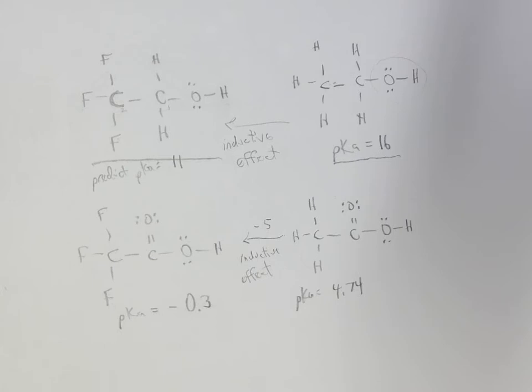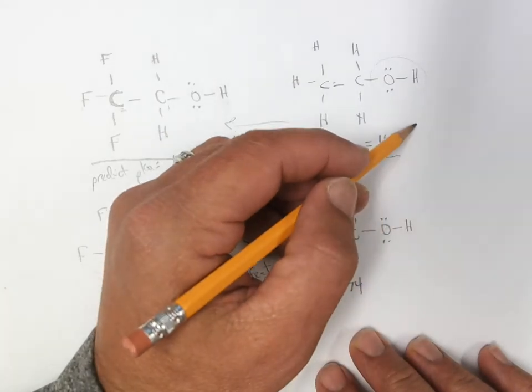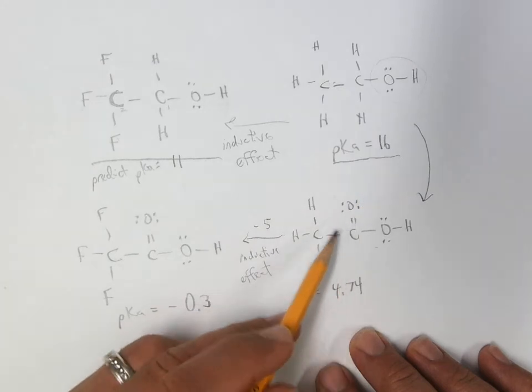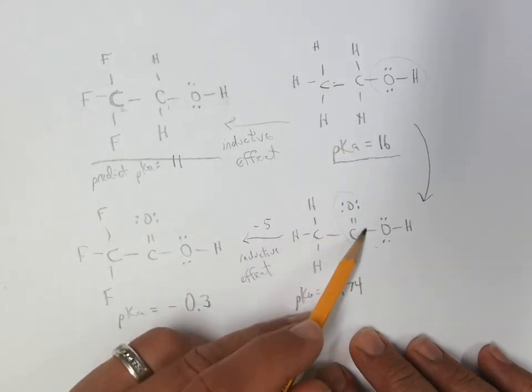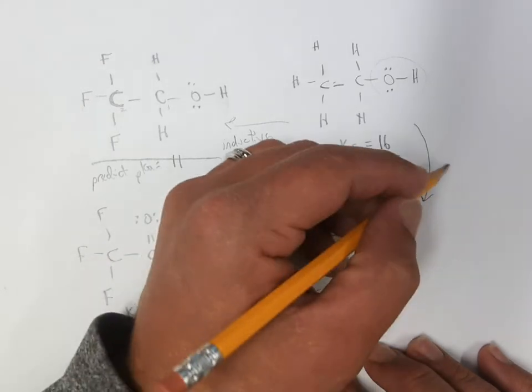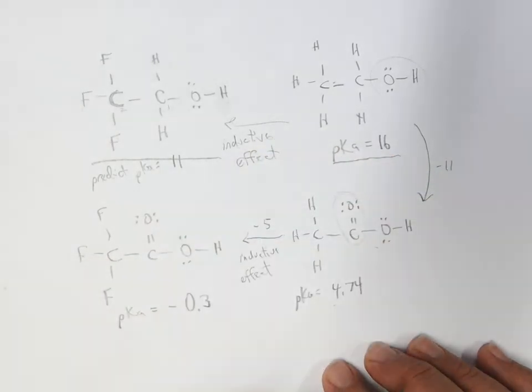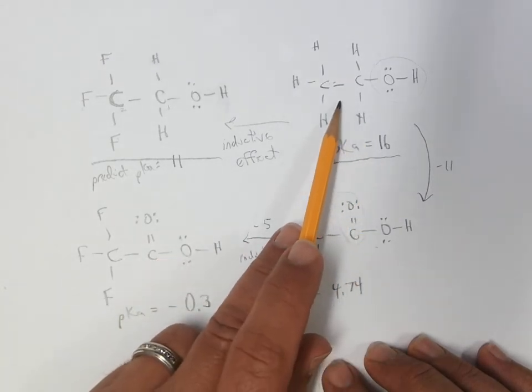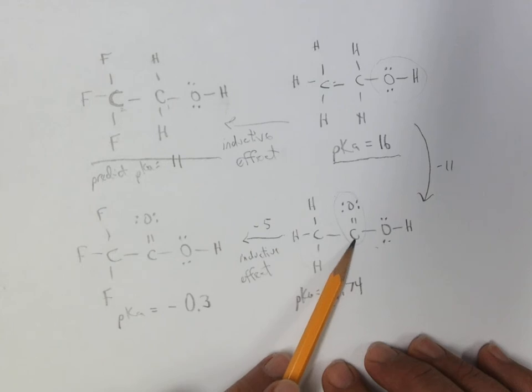The other thing that's sort of a double check here is the difference between ethanol and acetic acid is that we infuse some resonance with this guy. And so adding some resonance in here increases the acidity. So we go down about 11 units from the no resonance to the very good resonance.